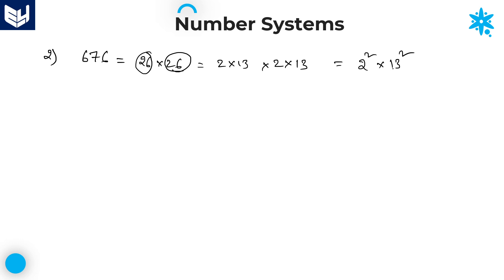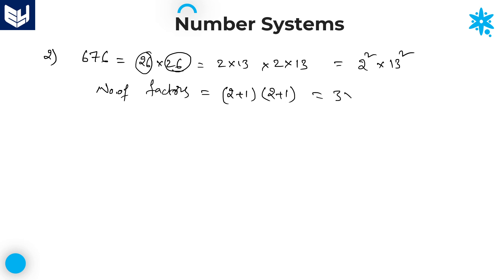Once the prime factorization is done, you need to calculate the number of factors. Number of factors is very simple — adding one to the powers and then multiplying each other. Here the power values are both 2. So: (2+1) × (2+1) = 3 × 3 = 9. Number of factors for 676 is 9.